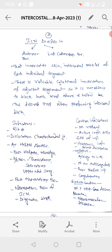Intercostal nerve divides in anterior branch and lateral cutaneous branch that innervates skin and intercostal muscles of the each individual segment.